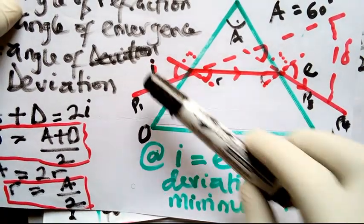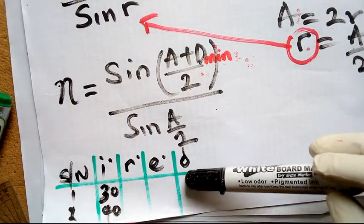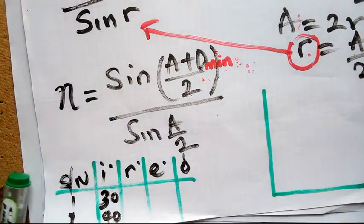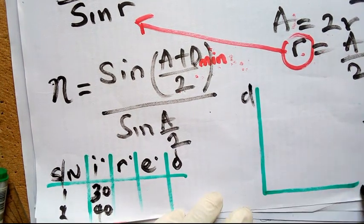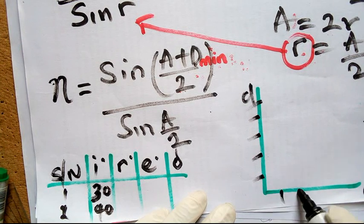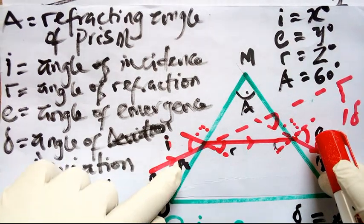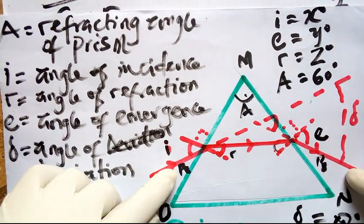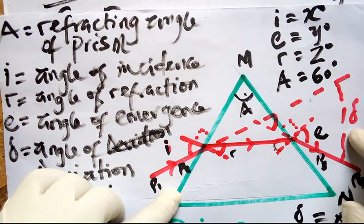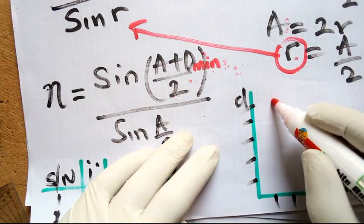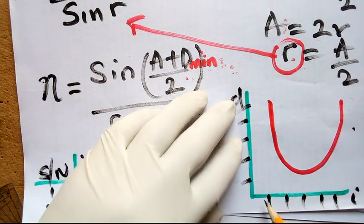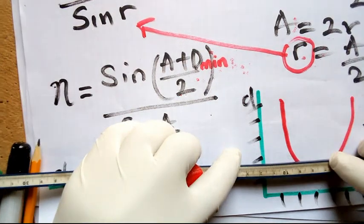After tabulating your readings, you may be asked to plot a graph of deviation against angle of incidence. As you increase the angle of incidence, the angle of deviation first reduces, then reaches a minimum point, and then increases again — producing a curve. The lowest point of this curve corresponds to the minimum deviation.